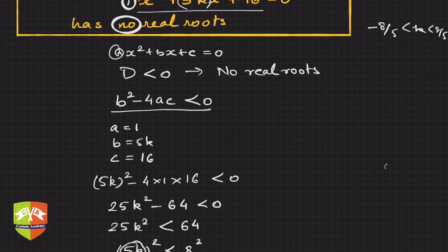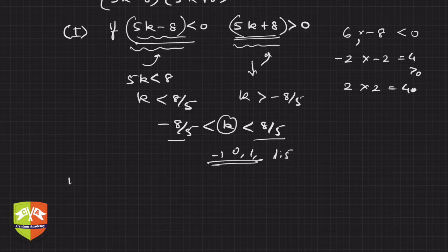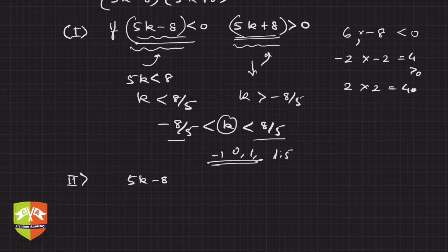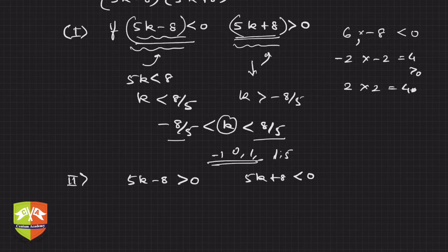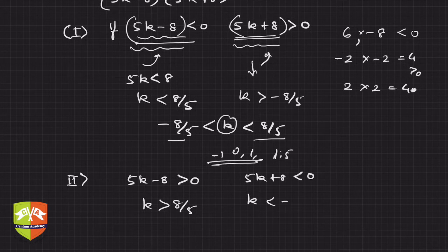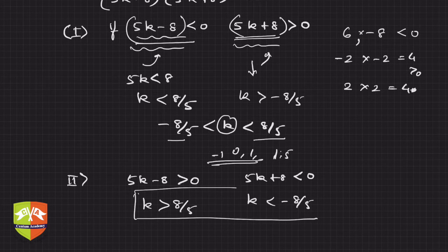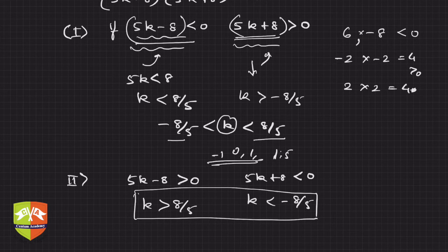Now for Case 2: 5k − 8 > 0 and 5k + 8 < 0, meaning k > 8/5 and k < −8/5 simultaneously. But there is no such k — it's like asking for a number that is both greater than 2 and less than −2 at the same time, which is not possible.